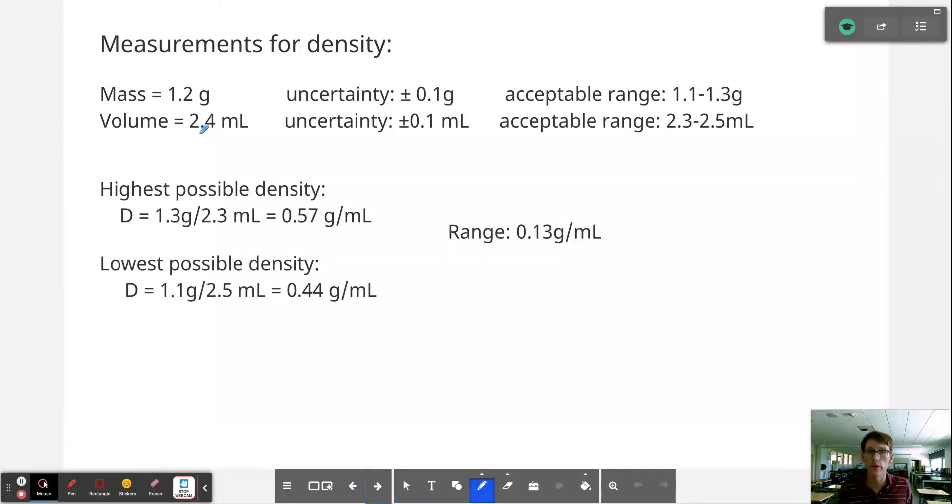Similarly with volume, the uncertainty is plus or minus 0.1 milliliters, and so the acceptable range of true values of volume could be anywhere between 2.3 and 2.5 milliliters.